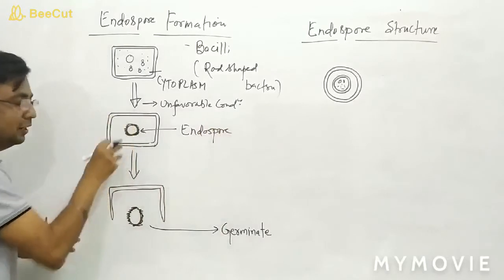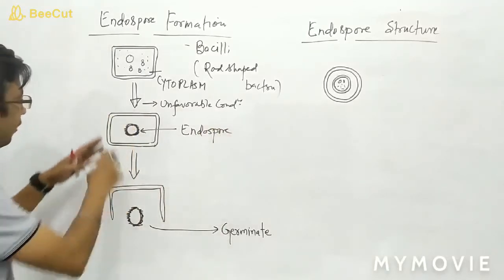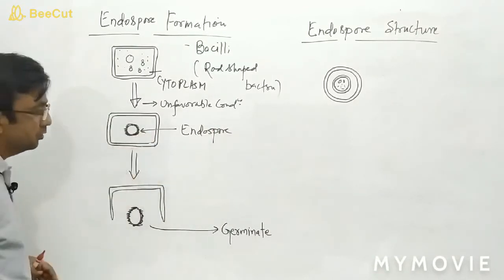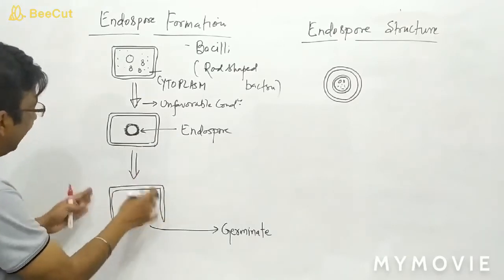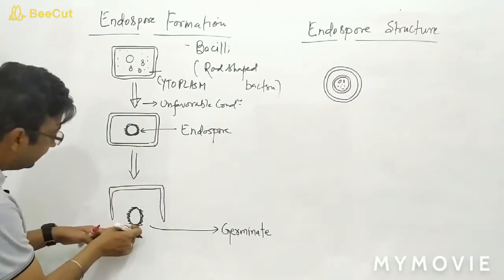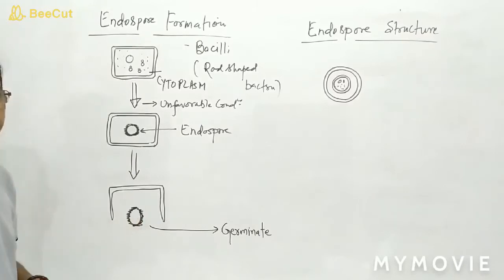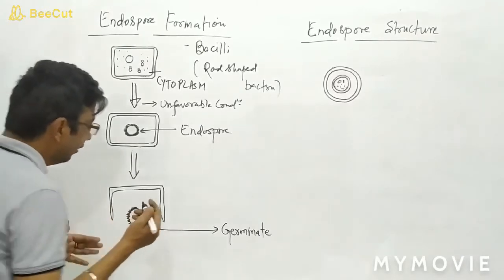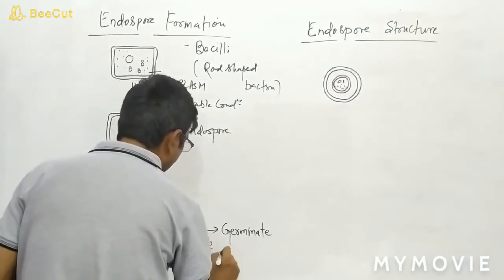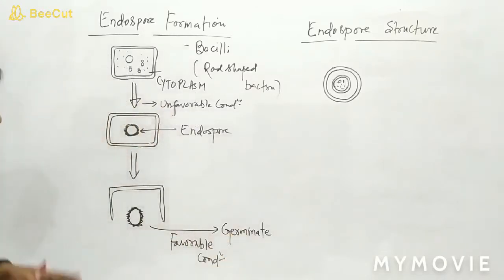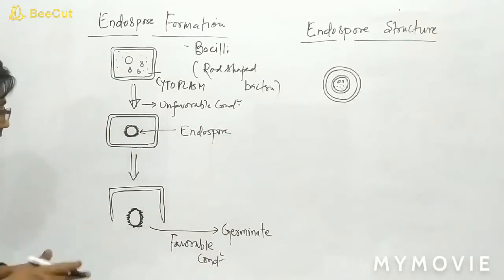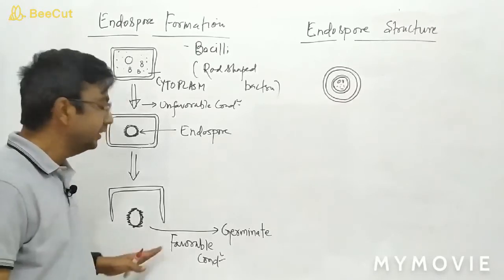Inside the endospore, the cytoplasmic content is present, and outside it is a thick wall. Once the endospore is formed, the bacterial cell wall ruptures and this endospore comes out of the bacteria. During favorable conditions, it germinates. Until favorable conditions arrive, it remains as an endospore; once favorable conditions arrive, then it germinates.